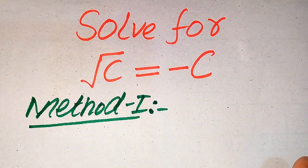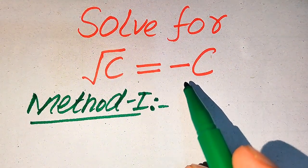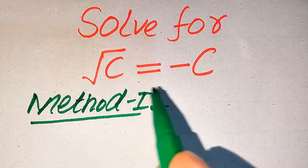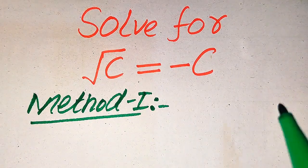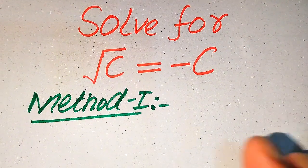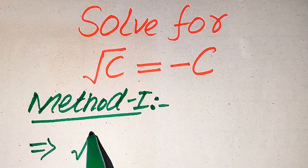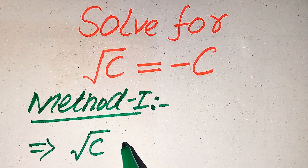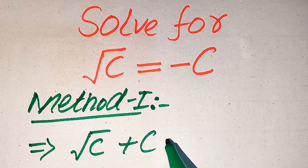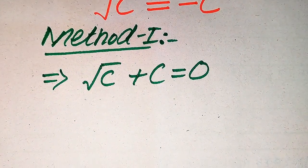Now we move towards our first method. In the first method, I will not use the squaring technique on both sides. Instead, I use a very unique method. We move minus C to the left hand side — it becomes positive — so we get: square root of C plus C equals 0.